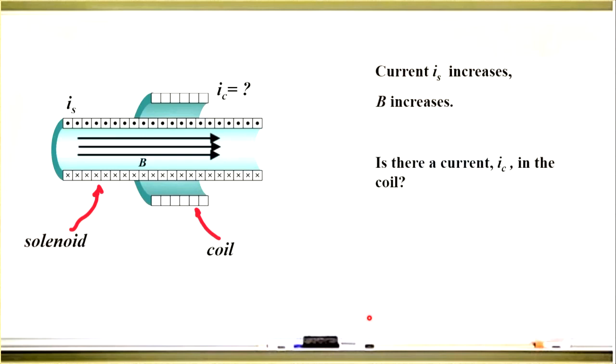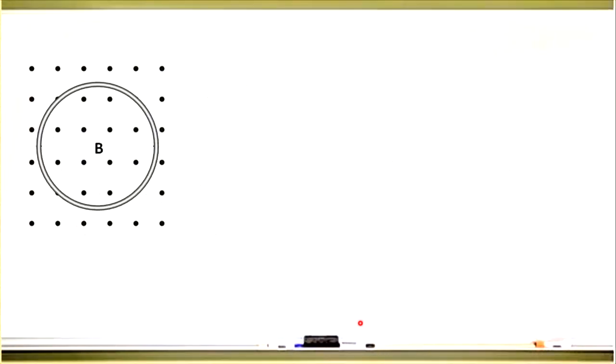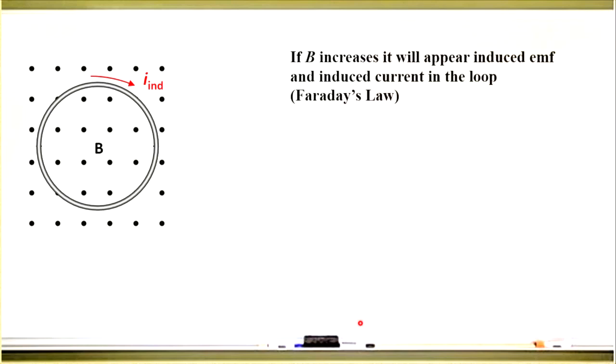One of my students suggested the following solution. He considered a loop placed in magnetic field B, which points out of the page. When B increases, it will appear induced EMF and induced current in the loop, according to Faraday's law.